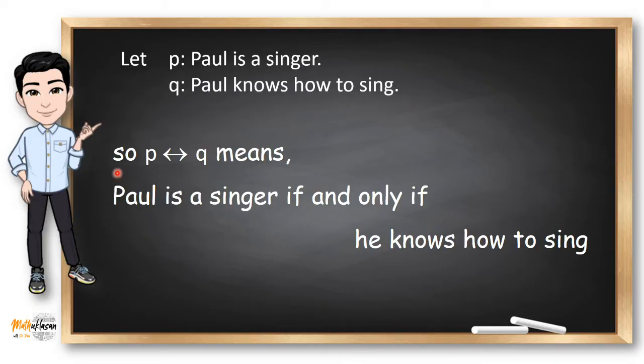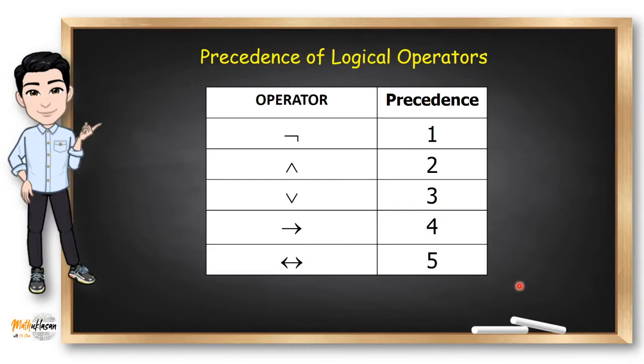In arithmetic operations, we have PEMDAS, right? Wherein multiplication precedes division, addition, and subtraction. So in logical operators, we also have laws of precedence. The operator negation comes first before conjunction, disjunction, conditional, and biconditional.